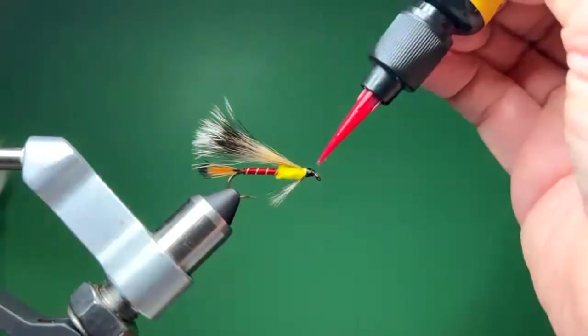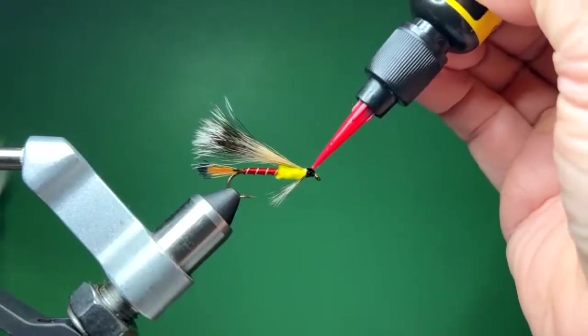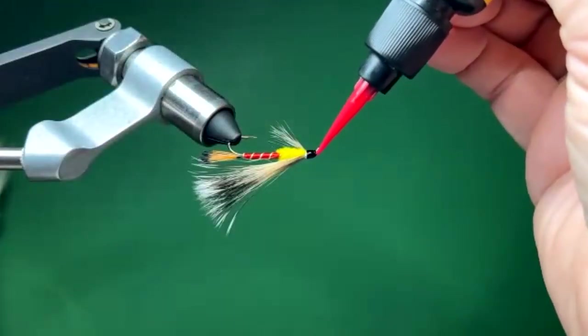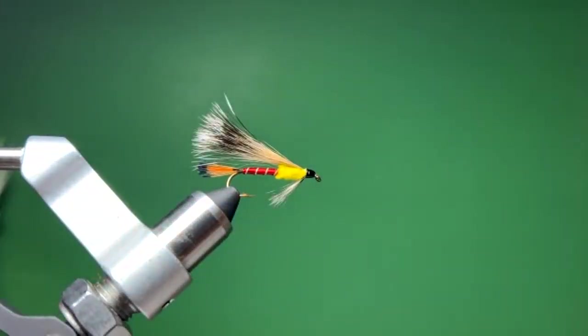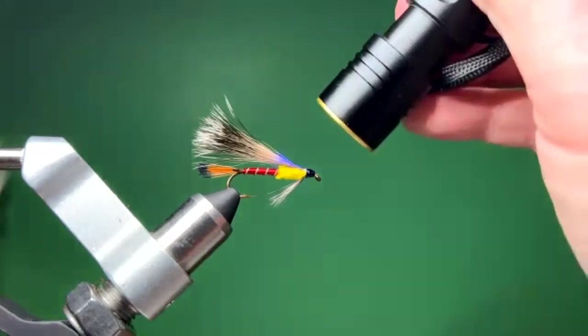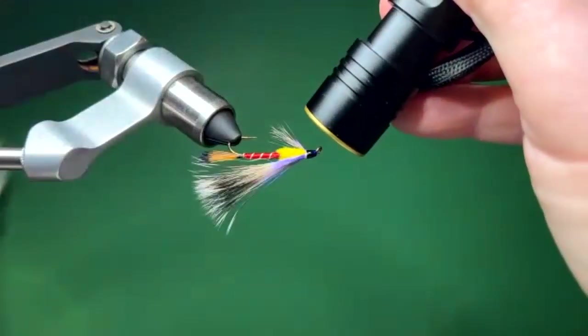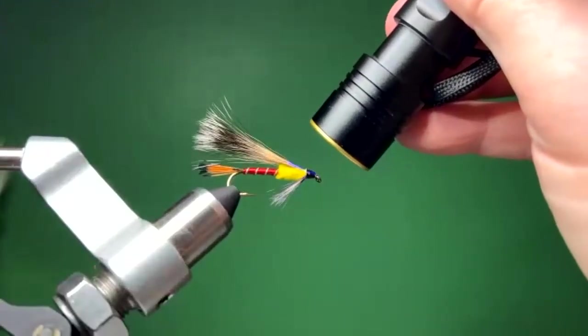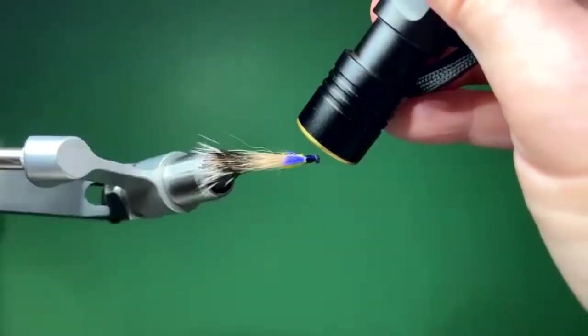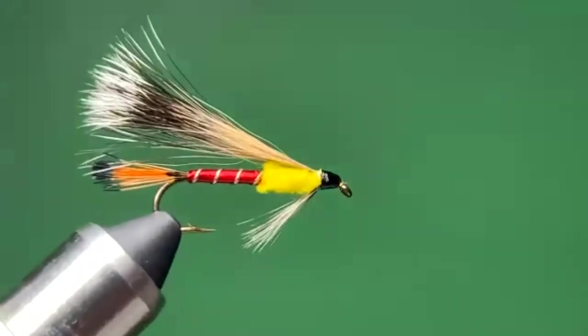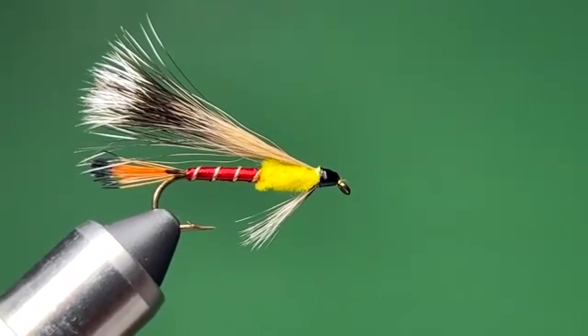Any questions out there from the gallery? Any questions while I glue the head? You could use gold wire, obviously, instead of the oval tinsel. And there's the Mormon Girl streamer. Looking good. Red says it's two very nice streamers. Well, thank you.